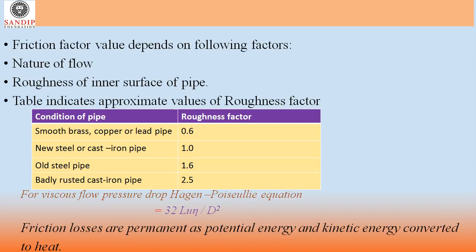The friction factor depends on the nature of flow — whether viscous or turbulent — and the roughness of the inner surface of the pipe. A table gives approximate roughness factor values: smooth brass, copper, or lead pipe has roughness factor 0.6; new steel or cast iron pipe is 1; old steel pipe is 1.6; and badly rusted cast iron pipe has the highest roughness factor of 2.5.